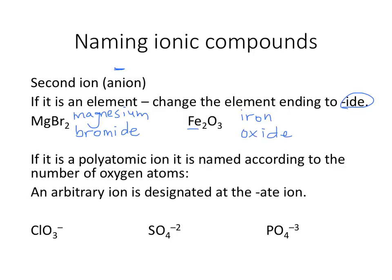For Fe2O3: Fe is iron, and O is oxide. But iron has variable oxidation states — it could be 2 or 3 or other things. Every ionic compound will be neutral, so all the charges will always cancel. Since oxygen is in group 16, it has a −2 charge, and there are three oxygens, giving a total charge of −6. Which means the iron must have a total charge of +6 in order for the charges to cancel. Since there are two iron atoms, each individual iron will be +3. So this is iron(III) oxide.